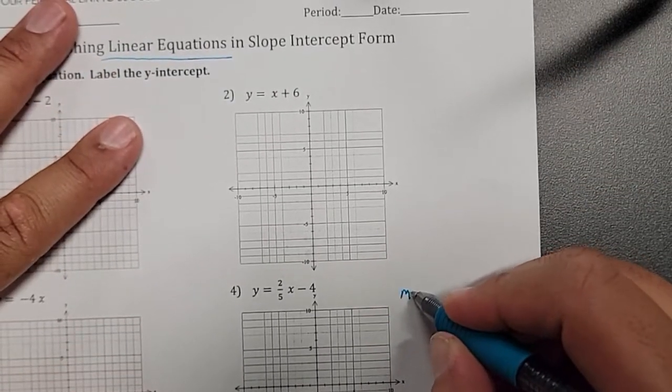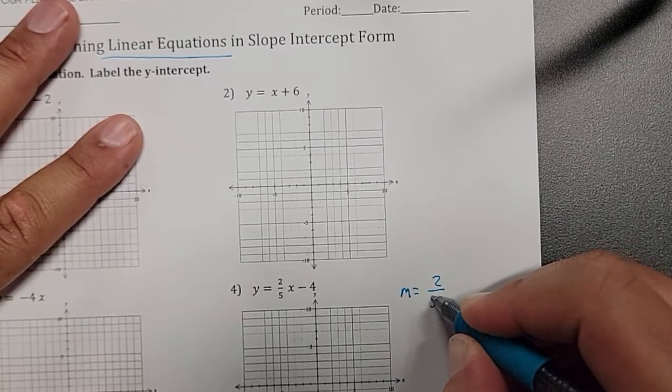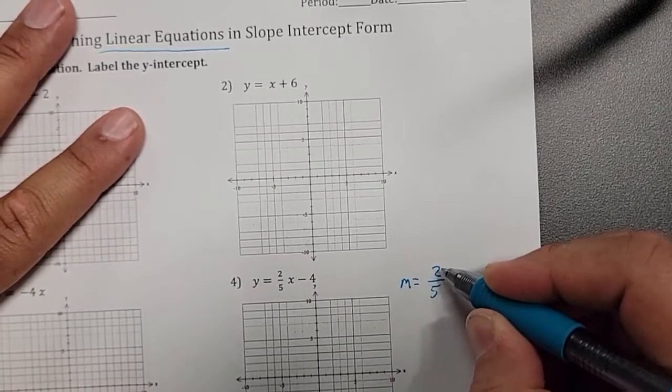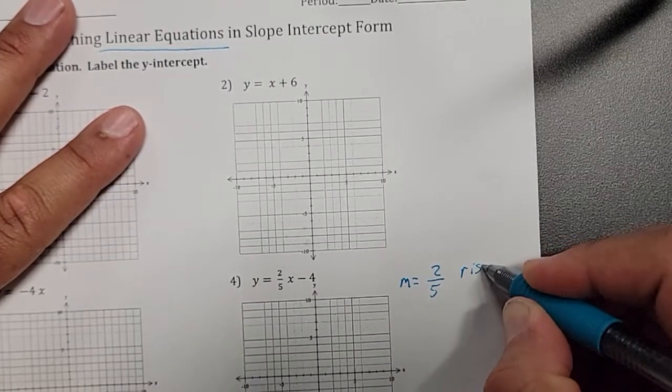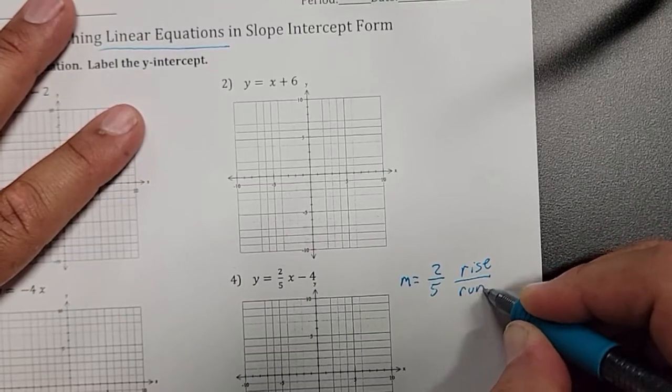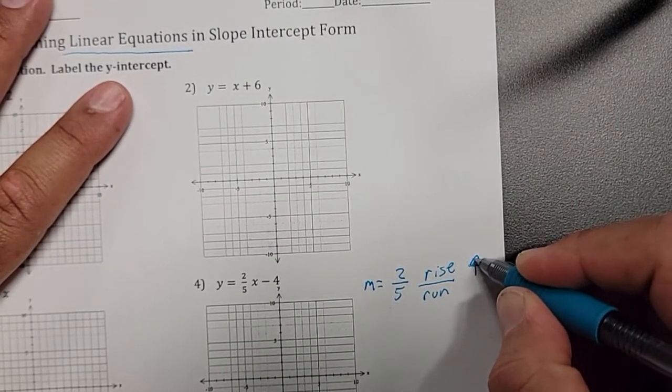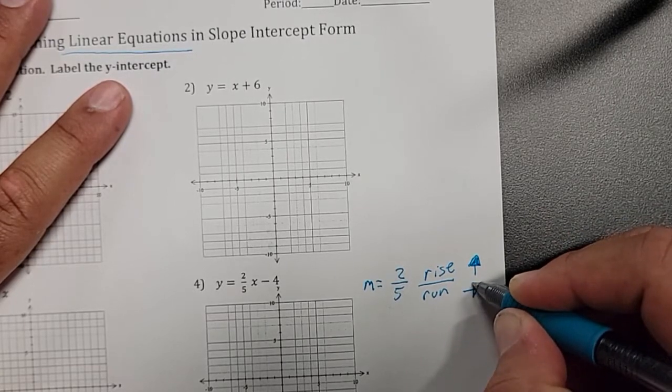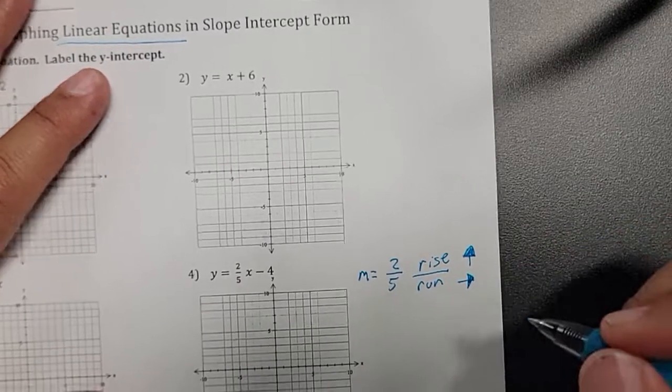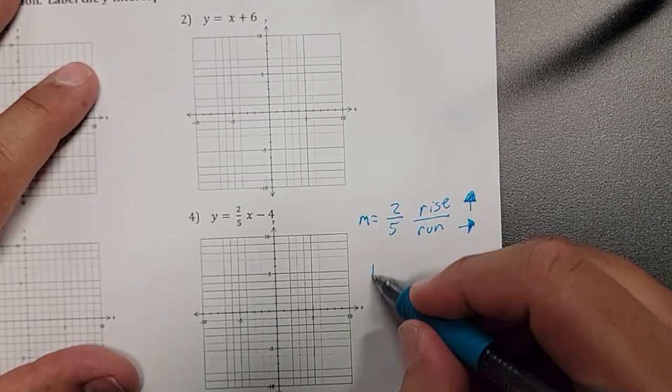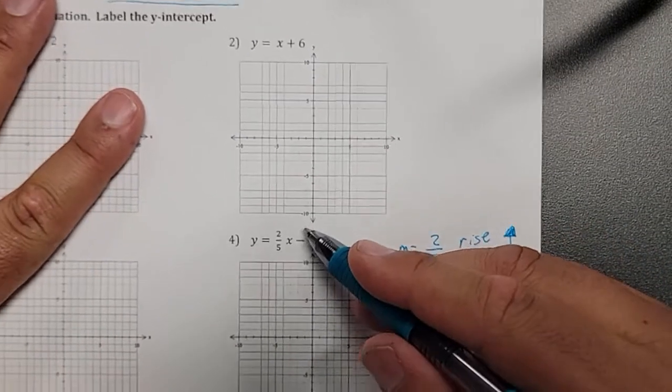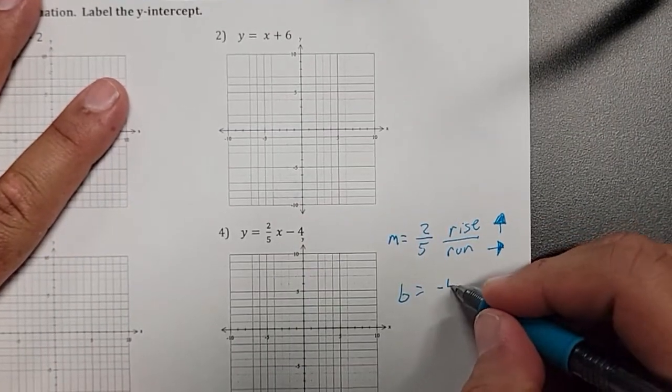So number four, our slope is going to be 2 over 5. So this is going to be my rise over run. And if the rise is a positive number, it goes up. The run is always going to go to the right. It's always going to be positive, so we don't have to worry about the run. It always goes to the right. Now my starting point, my y-intercept, in this case, since I have a minus 4, it's negative 4.